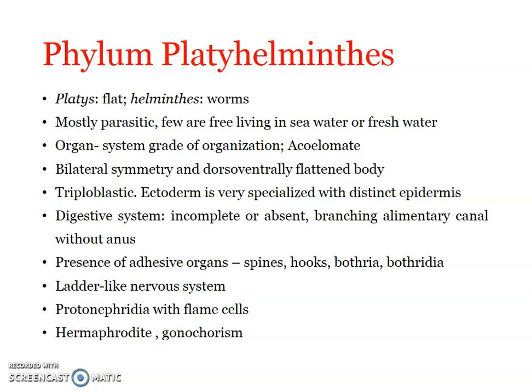When we look into the general characters in detail: they are triploblastic, meaning their body is derived from three embryonic germ layers — ectoderm, mesoderm, and endoderm. They are acoelomate, that is, they do not have any body cavity; the space between the organs is filled with mesenchyma, a special mesodermal tissue. They are bilaterally symmetrical — their body can be divided into two halves along the longitudinal axis, and they have differentiable anterior and posterior ends.